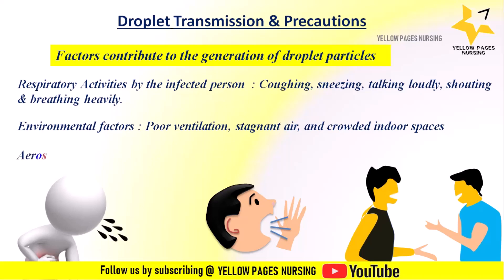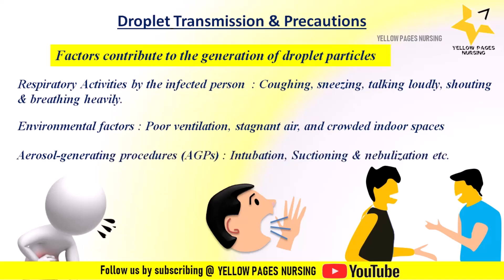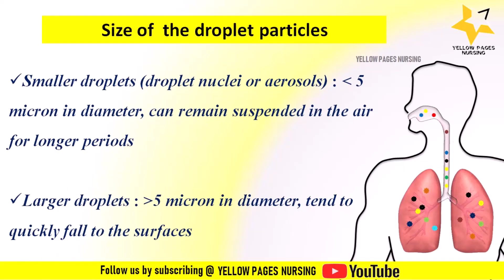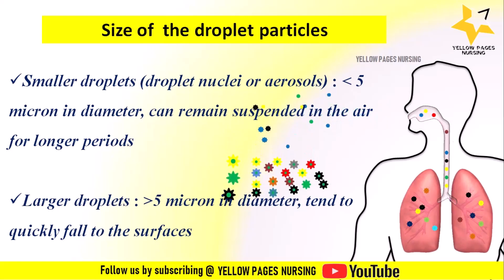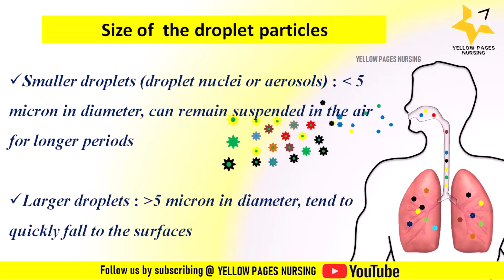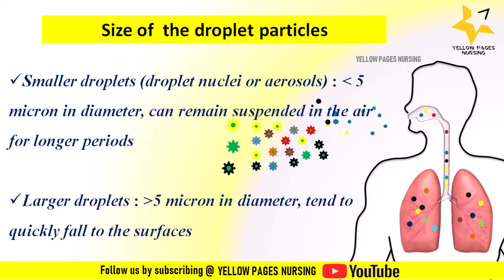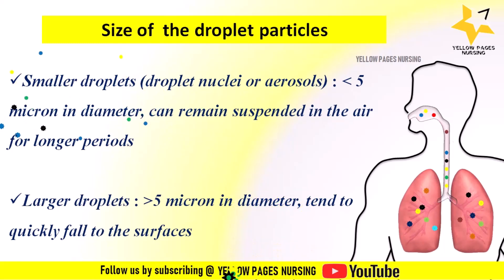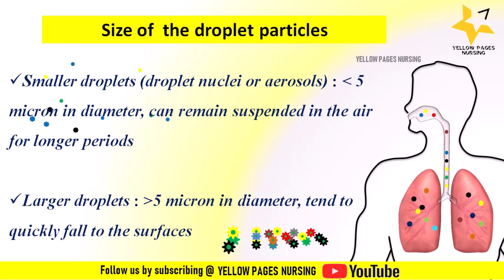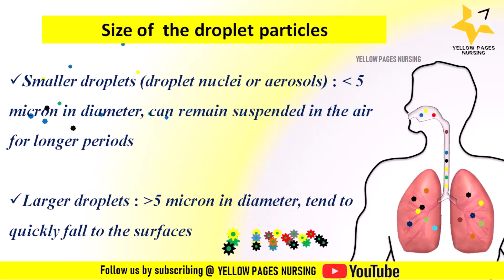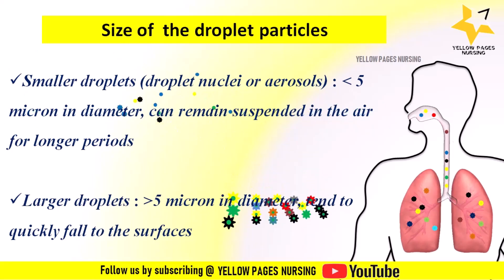or crowded indoor spaces can lead to the accumulation of infectious particles and increase the risk of droplet transmission. Next, aerosol-generating procedures — for example, intubation, bronchoscopy, nebulizer treatments, or high-flow oxygen therapy — can produce a significant amount of aerosols, increasing the risk of transmission to healthcare workers. Smaller droplets, known as droplet nuclei or aerosols, less than 5 micrometers in diameter, can remain suspended in the air for longer periods and are responsible for airborne transmission. Larger particles, 5 to 10 micrometers in diameter, tend to quickly fall to surfaces and are responsible for droplet transmission, traveling a short distance and falling within 6 feet or 2 meters.